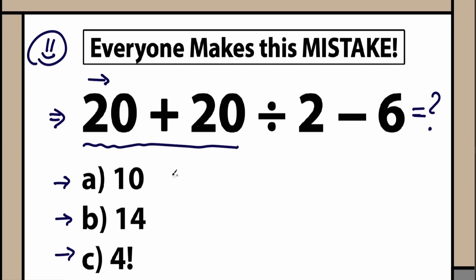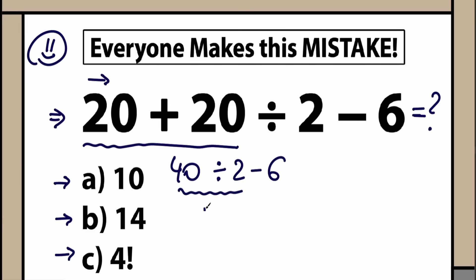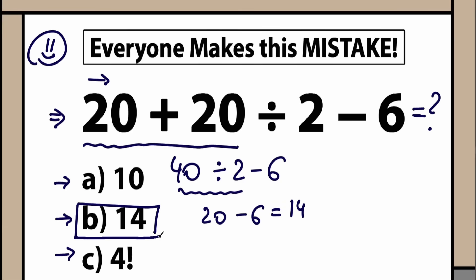Once more, here is our question: 20 plus 20 divided by 2 minus 6. A lot of students may say we need to start with addition from left to right, so 20 plus 20 equals 40. Then 40 divided by 2 equals 20, and 20 minus 6 equals 14. Many students would say the correct answer is 14 and move on.